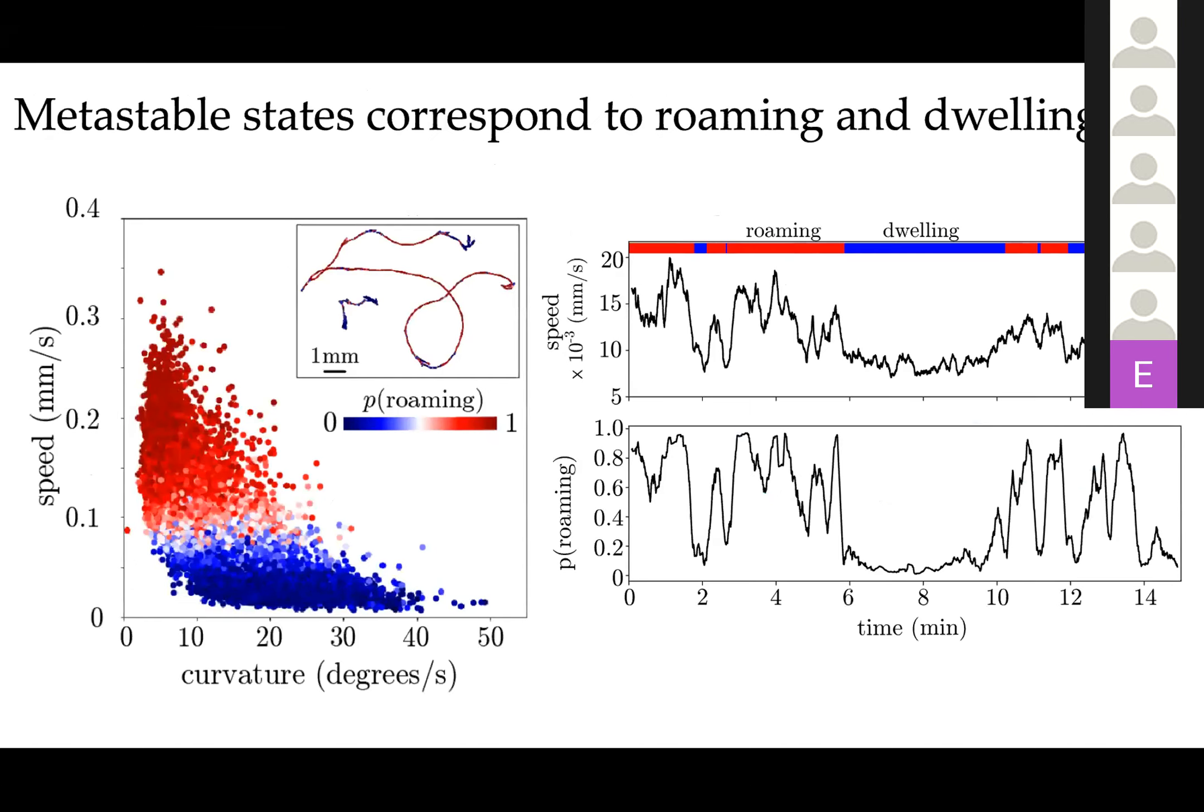Here I'm showing you on the left-hand side the speed and the curvature obtained from centroid trajectories. Now I'm not using posture; I'm using basically the position of the worms on the plate. From that I'm computing speed and the path curvature of the worms. Color-coded, I have clustered the longest-lived eigenfunction using fuzzy clustering. From blue to red I get the probability of belonging to each of the two clusters that I'm clustering the eigenfunction into.